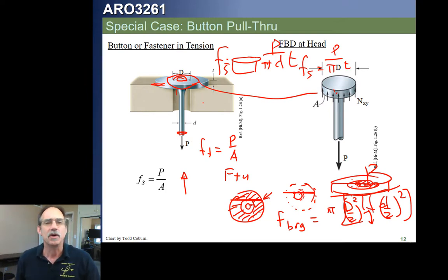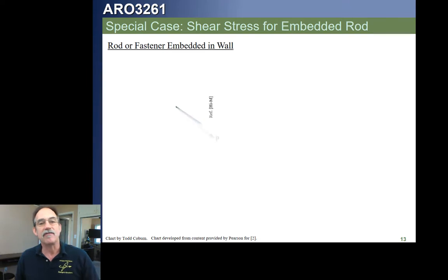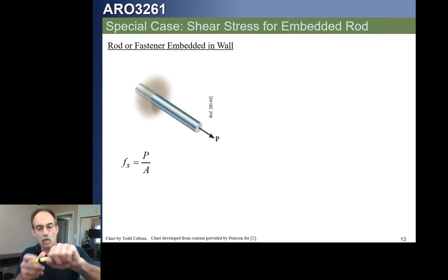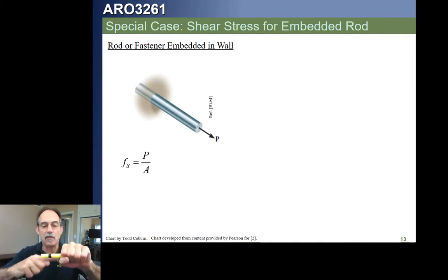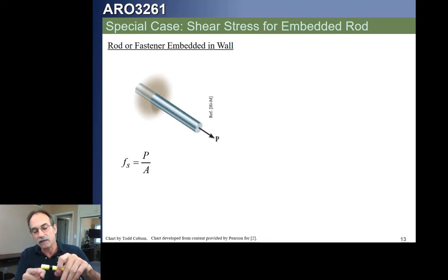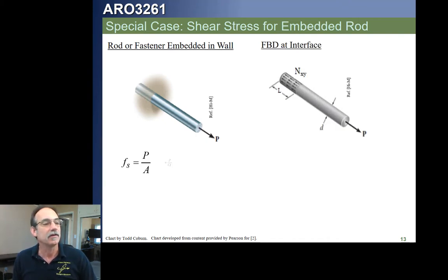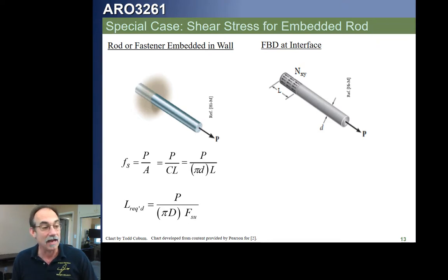Let's say we have a fastener embedded in a wall — somebody's pulling on it. We have a normal stress P over A on the cross-section, but also around the embedded length: if it's bonded with adhesive, the circumference times the embedment length gives the shear area. That shear stress is P over that area, because the force is parallel to the bonded cylindrical surface. This can be used to figure out how much embedment length we need to keep it from yanking out.